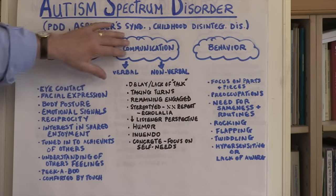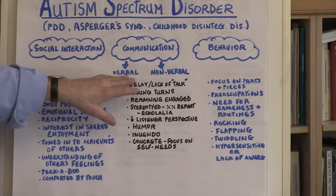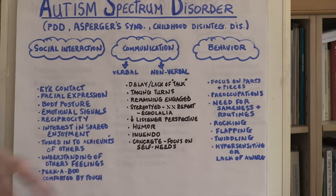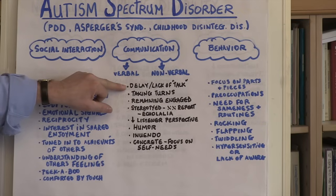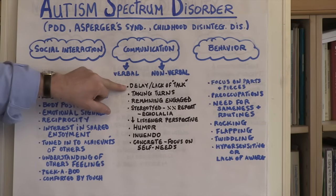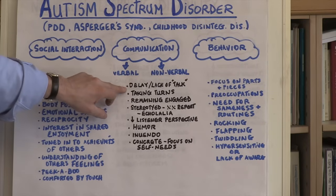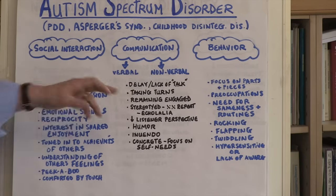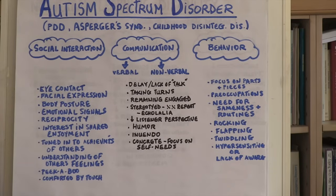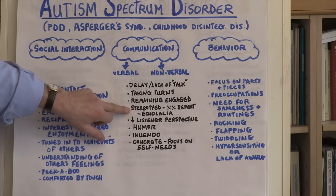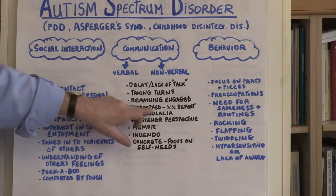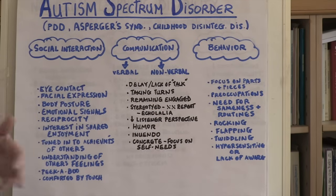In the communication area, we talk about people with autism having difficulties both in verbal and non-verbal domains. We very often see a delay or even a lack of talk. Young children with autism will sometimes begin to develop language and then it'll abruptly stop; in many cases, that language just never develops. They have difficulties with taking turns, and when they do say something, it's often not in a reciprocal give and take way. They have difficulty remaining engaged in conversations. Very often what we see in the communication domain is stereotyped communication — they'll often repeat a phrase, a sound, or a word.